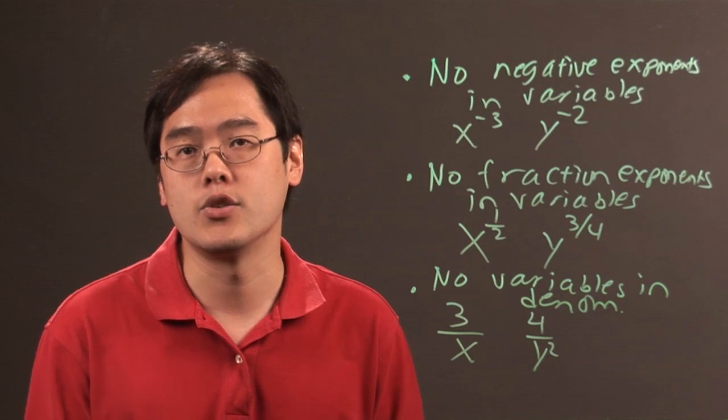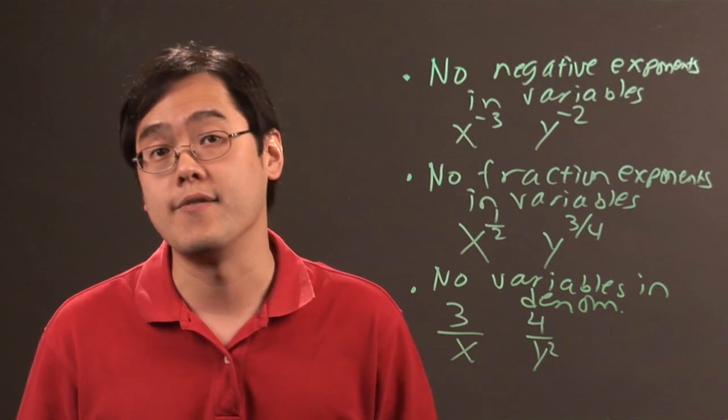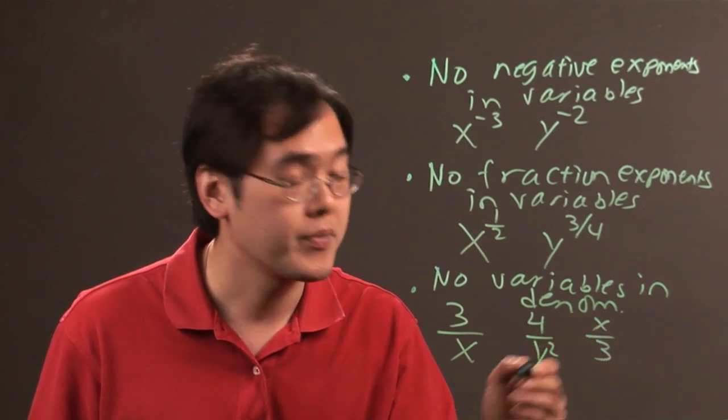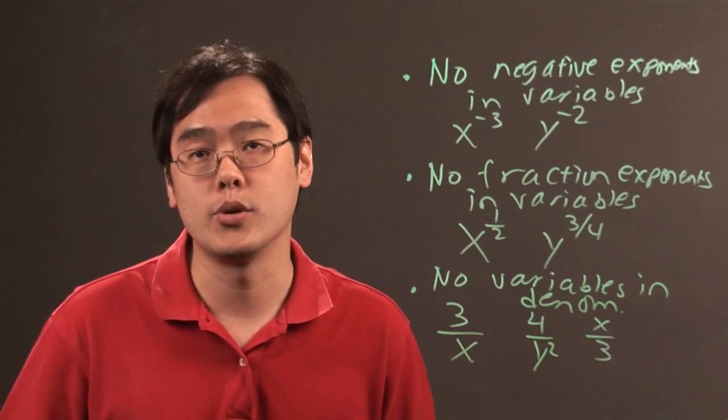You cannot have any variables in the denominator to have a polynomial. Now, you can have numbers in the denominator, that's okay. You can have x over 3. But you cannot have any variables in the denominator.